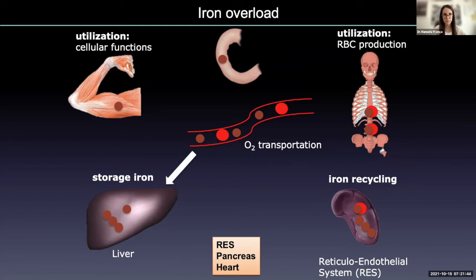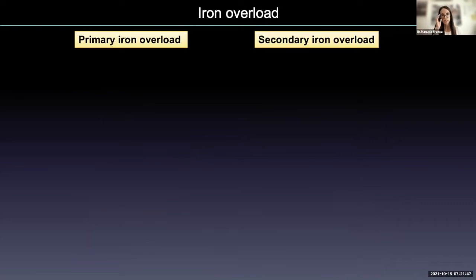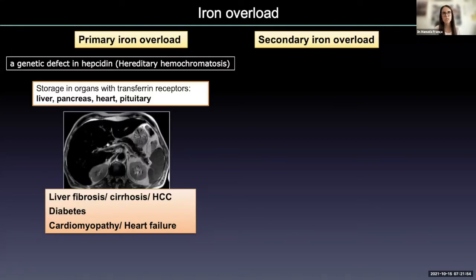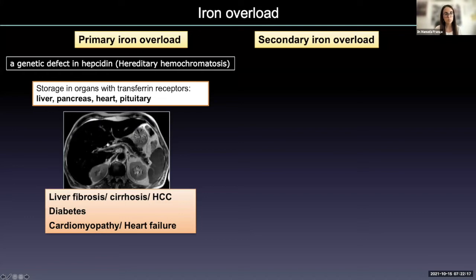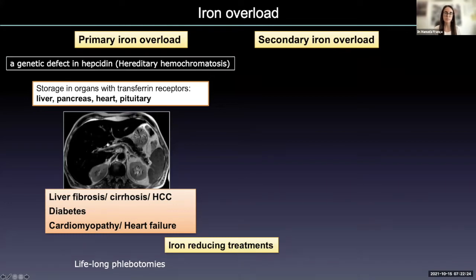Because excess iron leads to oxidative stress and cellular damage, with time patients with iron overload will develop diabetes, liver cirrhosis, and heart failure. There are two main types of iron overload diseases. In primary iron overload disease, like hereditary hemochromatosis, we have a genetic defect affecting iron absorption, increasing dietary iron intake. The excess iron is stored in organs with transferrin saturation like the liver, pancreas, and heart. Without treatment, these patients will develop cirrhosis, diabetes, and heart failure, and must be treated with lifelong phlebotomies.